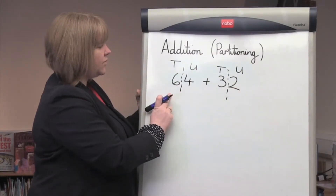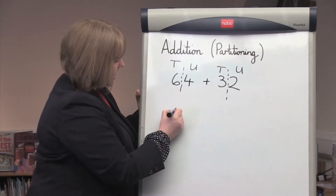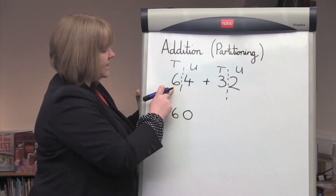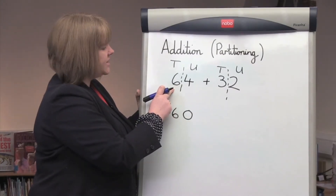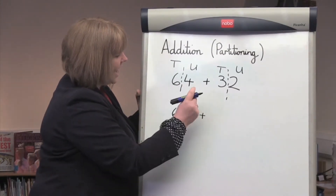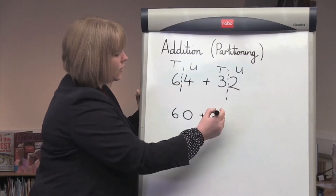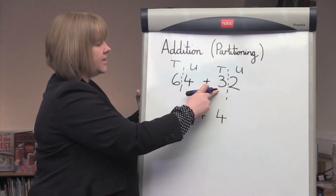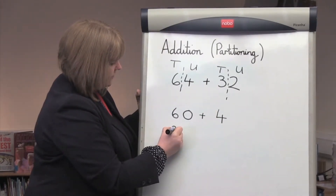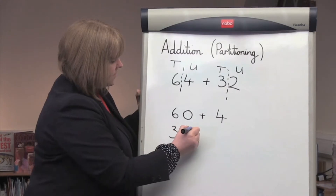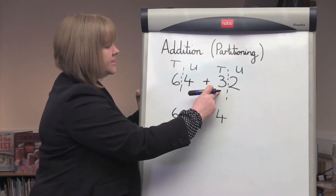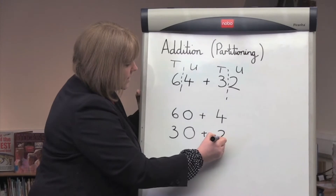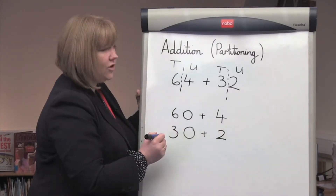So if we start with the 64 and partition this number, it would be 60 in the tens column, add 4 units. For the second number, 32, if we partition the number, it will be 30 in the tens column, 2 in the units column.